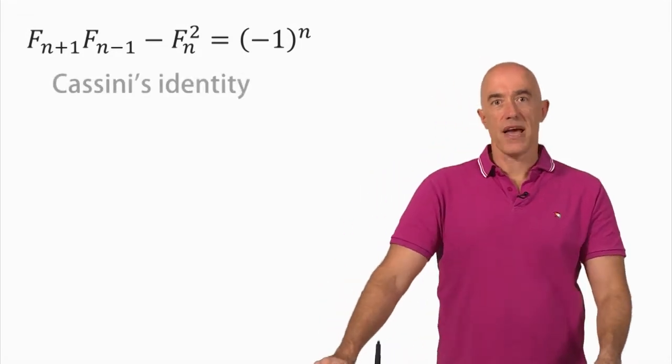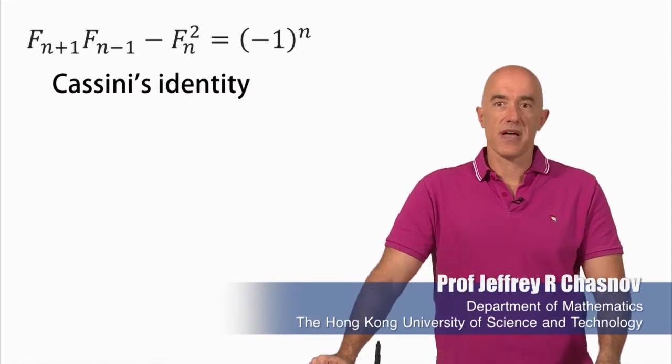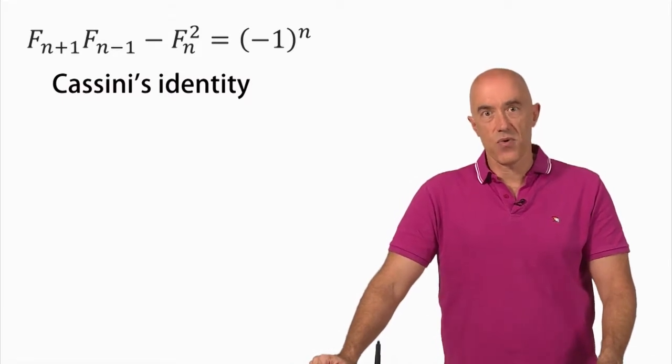Welcome back. We have Cassini's identity here: f_{n+1} times f_{n-1} minus f_n squared is equal to plus or minus one,